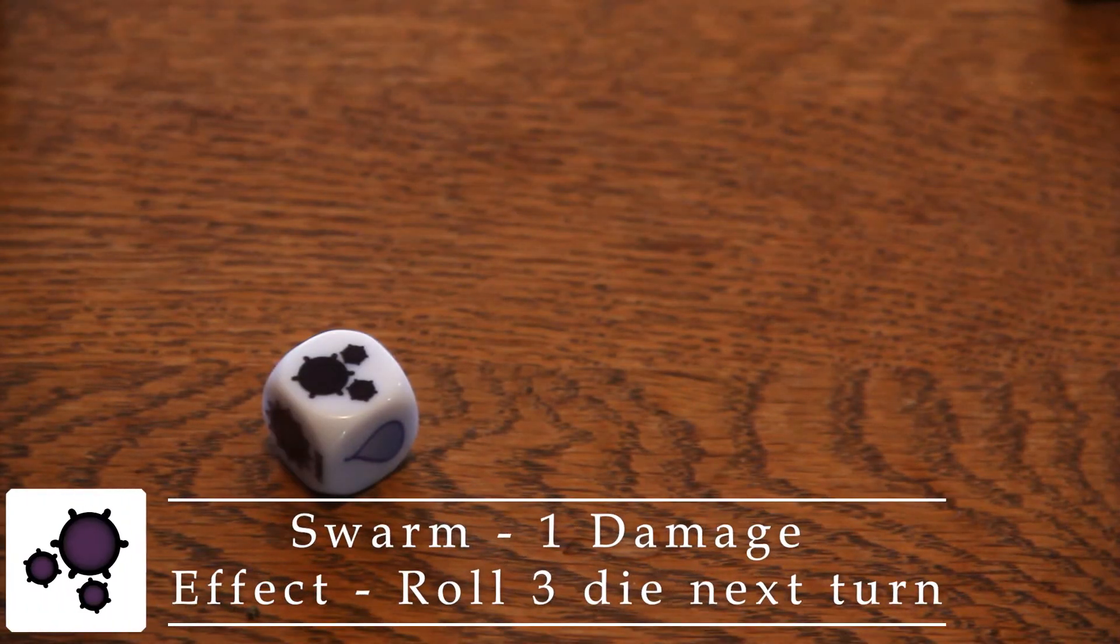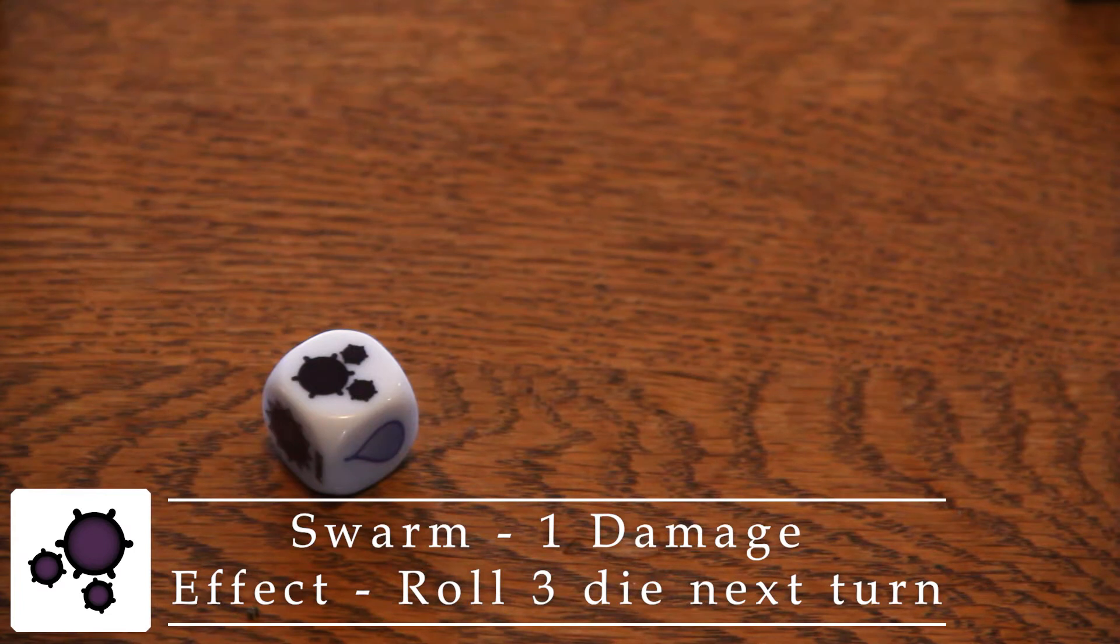Swarm deals 1 damage, then set this die forward. You have the swarm effect active, allowing you to roll all 3 of your dice on your next turn.